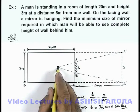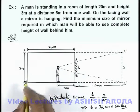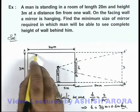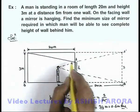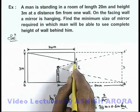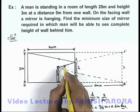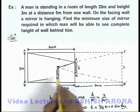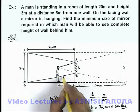And here the man will be able to see the complete image of the wall behind him because the light rays from the edges of the wall, when incident on the edge of the mirror, will be reaching the eye of this man from both the edges.